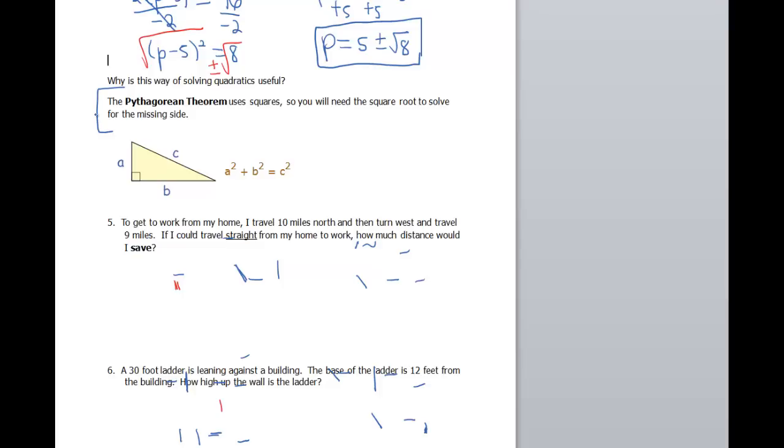So if you remember from your trig days or maybe your geometry days, the Pythagorean theorem says a squared plus b squared equals c squared, where a and b are the legs of your triangle. So those are gonna be your two sides that are perpendicular to each other. So these are your legs.